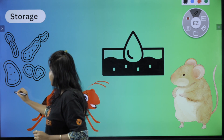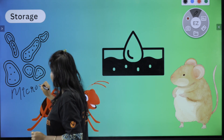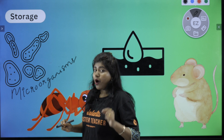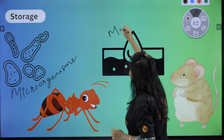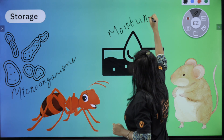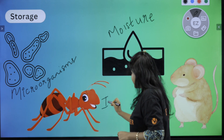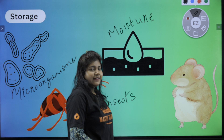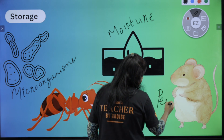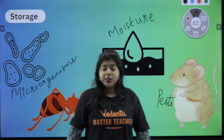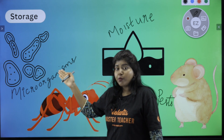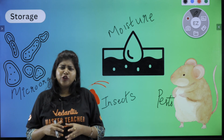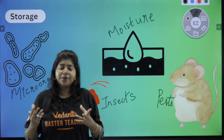So, the first one is microorganisms. Microorganisms are something we need to learn about. This is microorganisms — this is what we can say. Moisture. This is an insect. Moisture affects the grains; microorganisms also affect the grains.